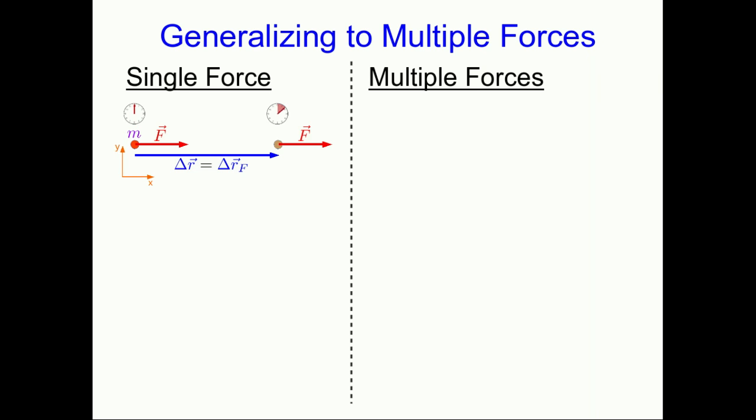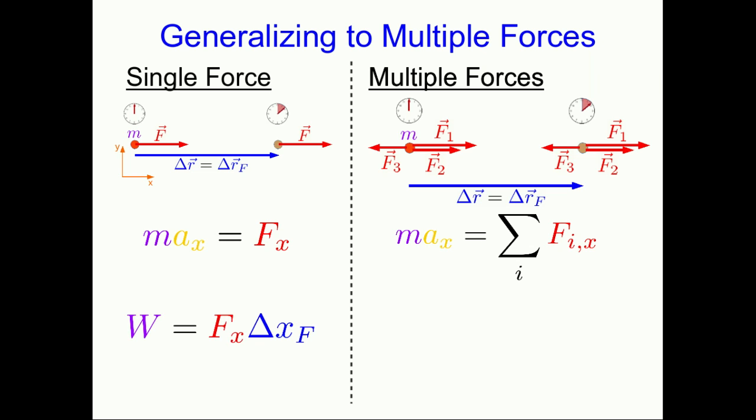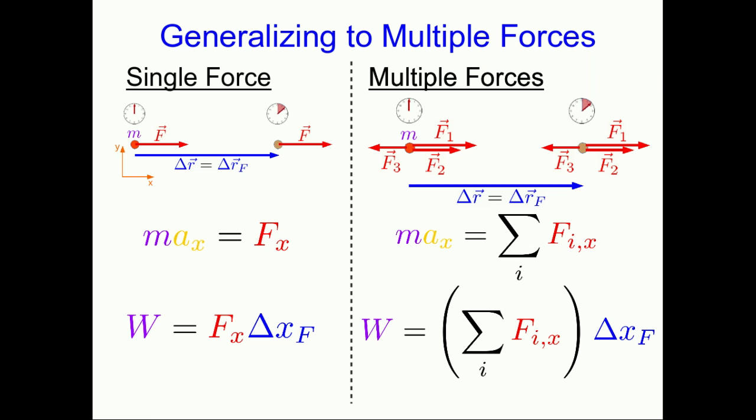A single force acting on a particle is an awfully special case, so let's generalize to multiple forces. The equation of motion with just one x-component of force gets replaced by a sum over the x-components of all forces on the particle. Everything else in the derivation was really just arguments from 1D kinematics with uniformly accelerated motion, and that'll be the same whether we have one force or multiple forces, as long as the forces are constant. So our final work expression is the same, except with the single force component replaced by a sum of force components. This equation is useful enough to deserve a name — we'll call it the work equation.